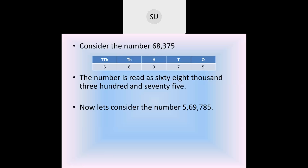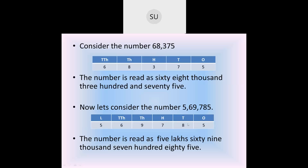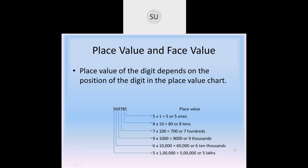Now consider the number 5,69,785. We write it in the place value chart: 5 in ones, 8 in tens, 7 in hundreds, 9 in thousands, 6 in ten-thousands and 5 in lakhs. In the lakhs period we have 5, which is 5,00,000. In the thousands period we have 69, read as 69,000. And in the ones period we have 785. So the number is 5,69,785.